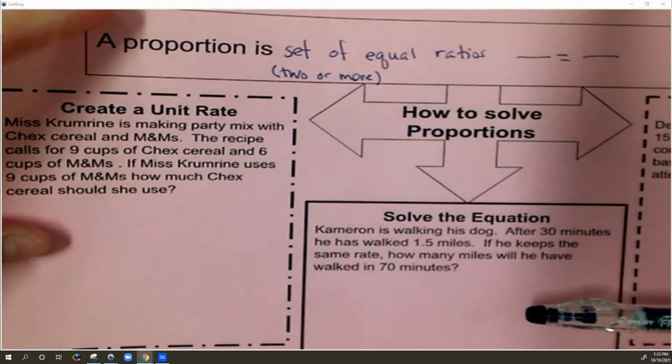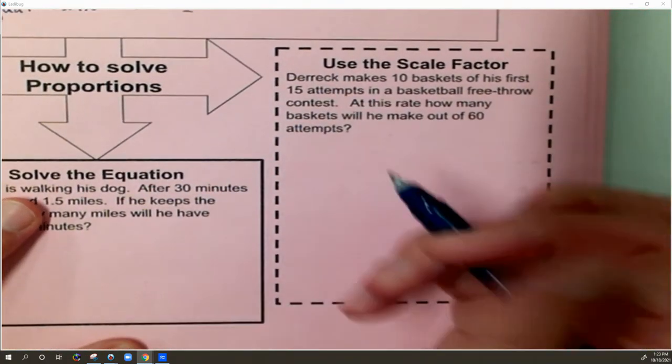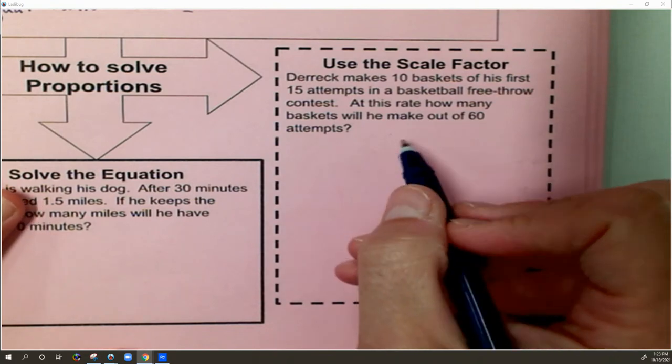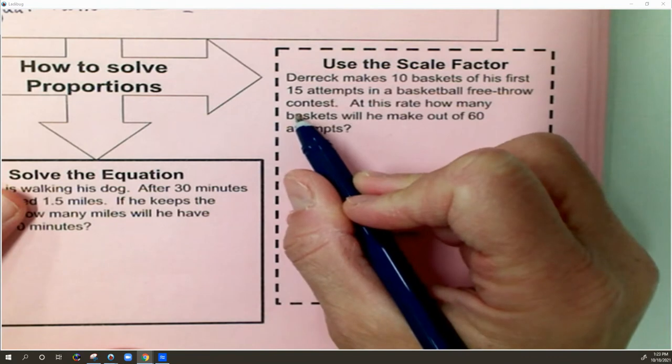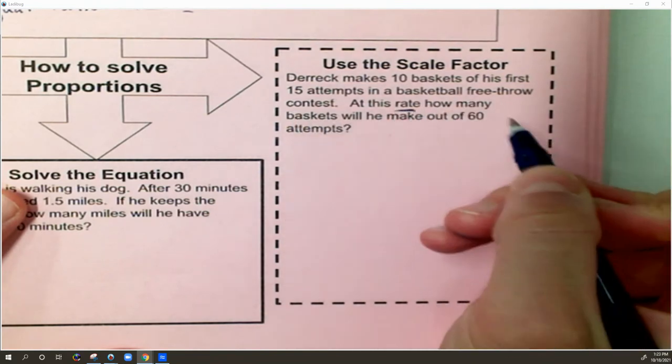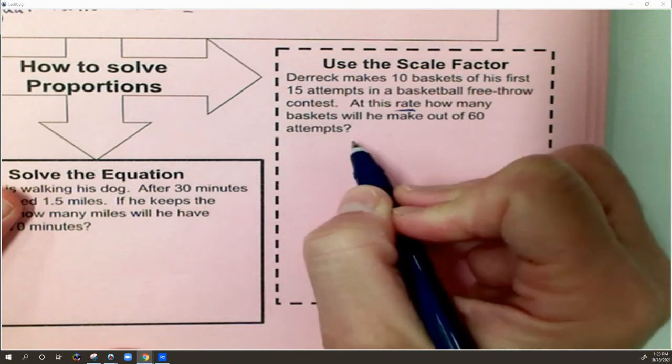Well, when we learned how to do this, we started with using a scale factor. So let me start there. Derek makes 10 baskets of his first 15 attempts in a basketball free throw contest. At this rate, that means it's staying constant, how many baskets will he make out of 60 attempts?